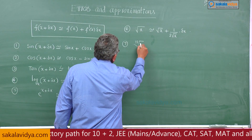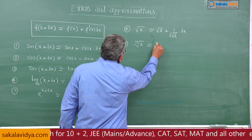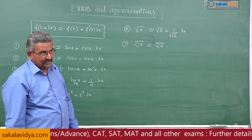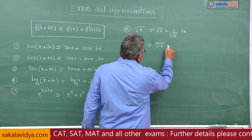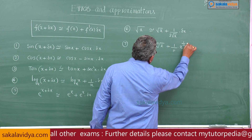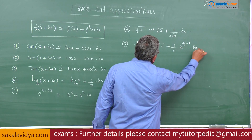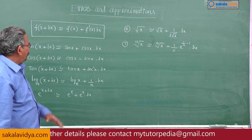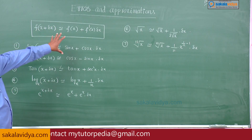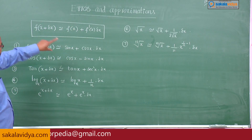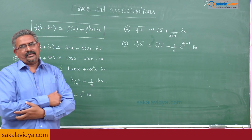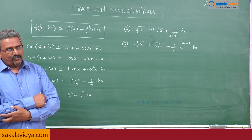Similarly, the nth root of x plus delta x is approximately equal to the nth root of x plus the differentiation of nth root x, which is 1 by n times x to the power of 1 by n minus 1, into delta x. Like that we can find out approximate values using this shortcut formula: f of x plus delta x approximately equal to f of x plus f dash x into delta x. Under this, these seven or more cases you can remember. I hope you might have understood.